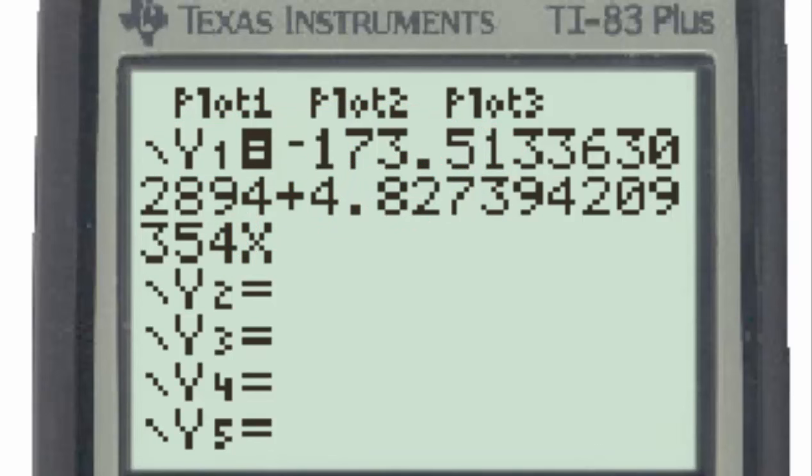Notice that the slope of the regression line is 4.83, the number before the x, or the x coefficient, and the y-intercept is negative 173.5.